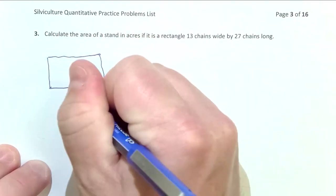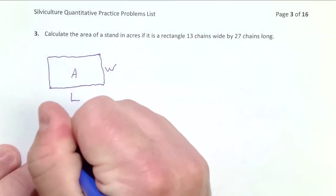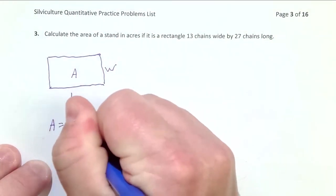Area equals length times width for a rectangle. We know area equals length times width.